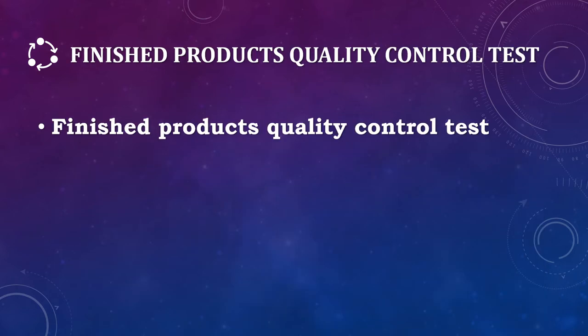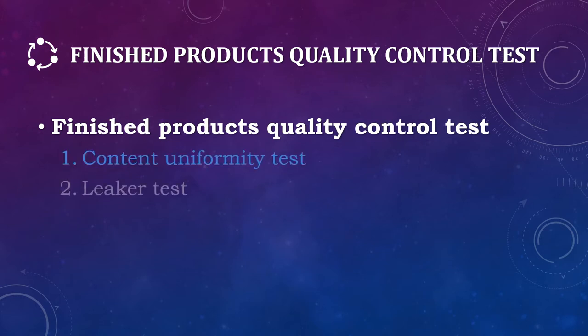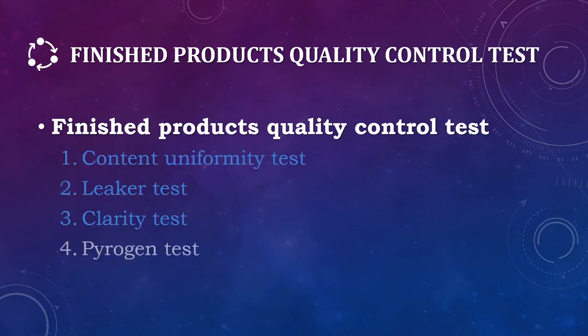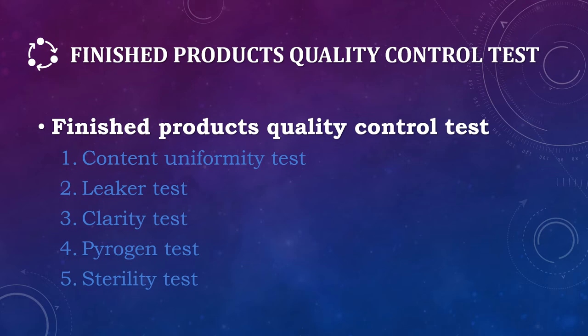Let's see what are the different tests used to evaluate finished products. These are: content uniformity test, liquor test, clarity test, pyrogen test, and sterility test. These are the five different tests used to control finished products in parenteral manufacturing.